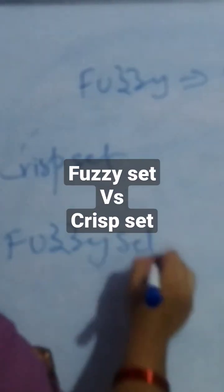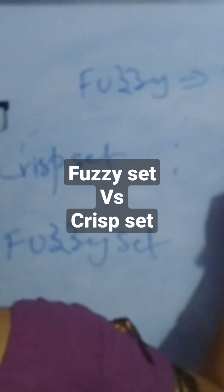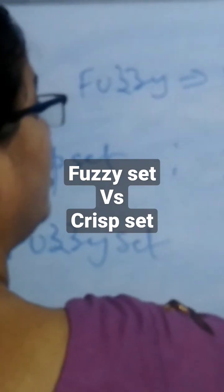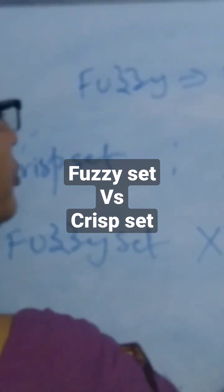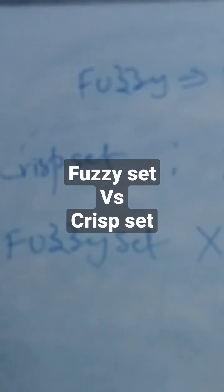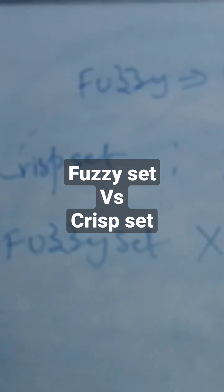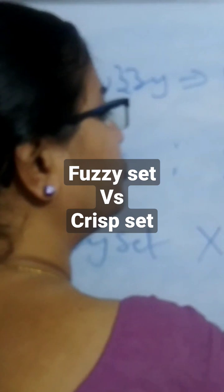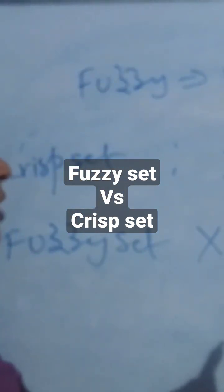We are going to see the crisp set, where x belongs to the set {0, 1}, whereas in the fuzzy set, x belongs to the interval [0, 1]. We can represent the crisp set and fuzzy set with the help of these two examples. In the crisp set, we can directly determine whether a particular element belongs to the set or not.